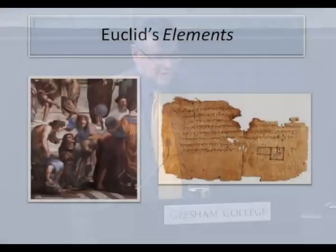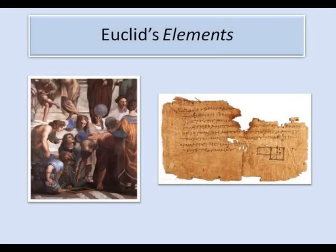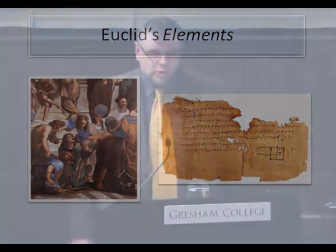The tradition of proof goes back to perhaps the most famous book in the history of mathematics, Euclid's Elements, written around 300 BCE. We know almost nothing about Euclid. We don't know how much of the elements is his own original work, and how much is his presentation of earlier mathematics.